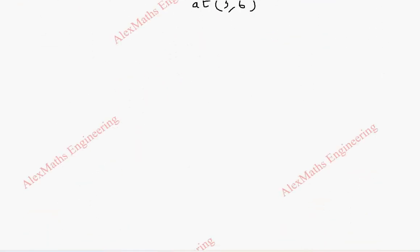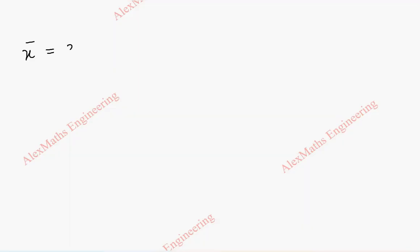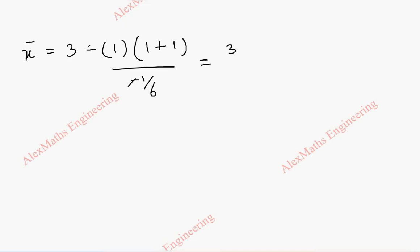Now substituting into x̄: x̄ = x − (dy/dx)(1 + (dy/dx)²) / (d²y/dx²) = 3 − (1)(1 + 1) / (−1/6). The negative sign flips to plus, and multiplying by 6 gives 3 + 12 = 15.